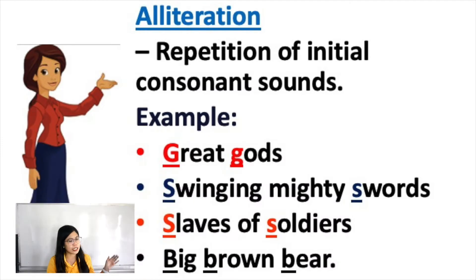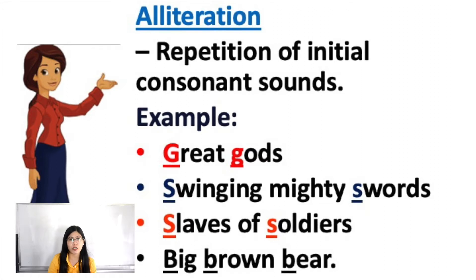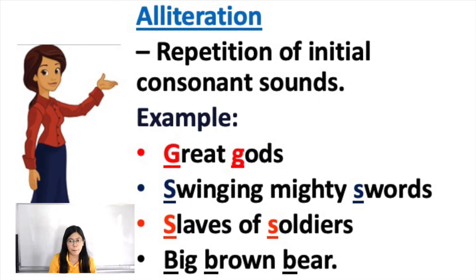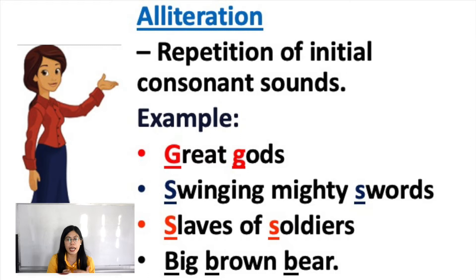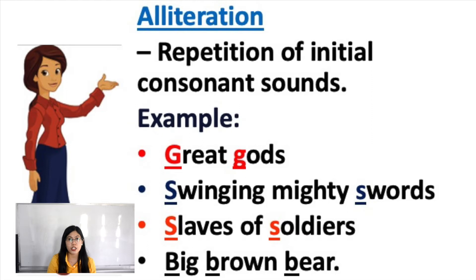We have here an example: 'Great gods!' As you can see, we have the repetition of the initial consonant sound G — G in 'great' and G in 'gods.' Another example: 'Swinging mighty swords.' The consonant letter S is repeated — S in 'swinging' and S in 'swords.' So the sound of the consonant letter is being repeated in this example.